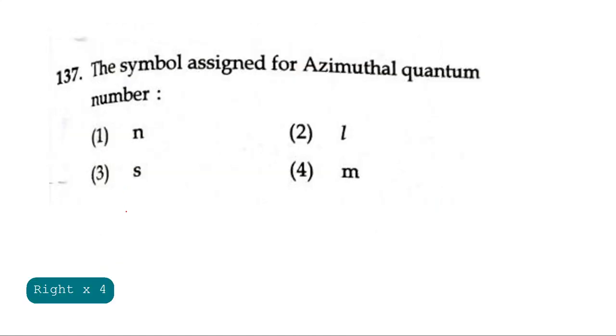Question 137: The symbol assigned for azimuthal quantum number is? Option N is the principal quantum number. L is the azimuthal quantum number. S is the spin quantum number and M is the magnetic quantum number. The question asked is azimuthal quantum number, so L is right. Azimuthal quantum number is used for determining the shape of the given orbital and the angular momentum of the given particle. The correct option is answer 2.